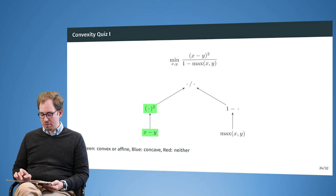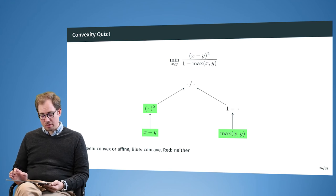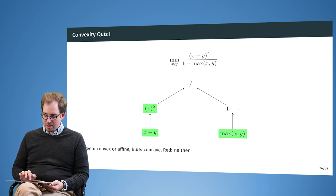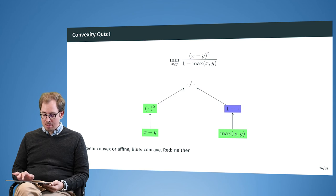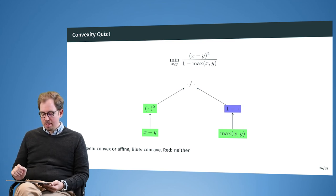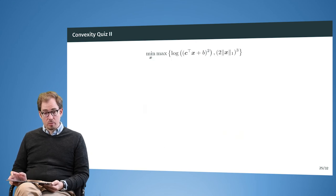The maximum of two convex inputs is also convex. However, one minus an input generates a concave result: max of y is convex, but taking the negative makes it concave. In the end, this concave element is used in a place where the outer function is decreasing, so overall the function is convex.